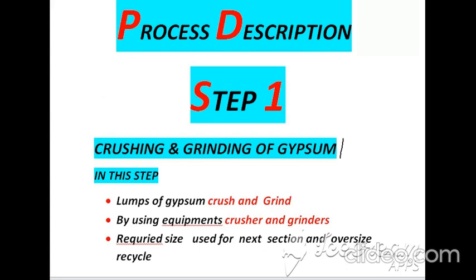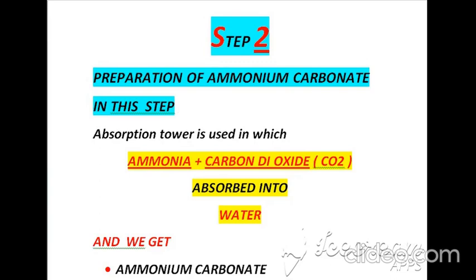In the first step, which is crushing and grinding of gypsum, we use crushers and grinders to crush and grind lumps of gypsum. As a result we obtain two types of product sizes. The required size is sent to the next section for further processing, and oversize material is recycled to get the required size.